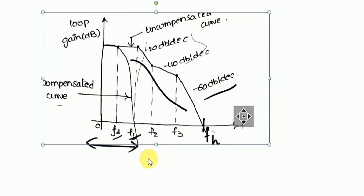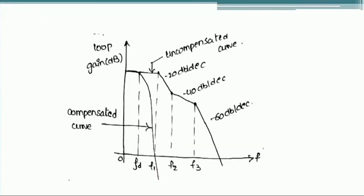In order to overcome this drawback, we go for the second method: the pole-zero compensation technique. In the next video, we are going to see what pole-zero compensation is and how the drawback of dominant pole compensation is overcome by using the pole-zero compensation technique. Thank you.